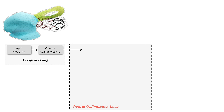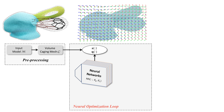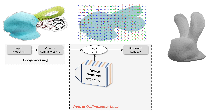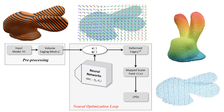The core of our slicer is a neural optimizer where neural networks are employed to formulate the functions of continuous fields and the scaling ratios. These two functions are then used to drive the deformation of the caging mesh. As a result, a scalar field can be obtained in the model space by the mapping between the deformed and undeformed cages. The local printing directions are obtained as a gradient of the scalar field.